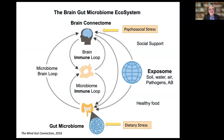I'd like to start with a simple schematic of the brain-gut-microbiome ecosystem, with basically two main nodes or hubs: the brain connectome — all the networks within the brain — and the gut connectome with the microbiome in it. The gut connectome is the combination and interaction of immune cells, nervous cells, endocrine cells, and the microbiome.